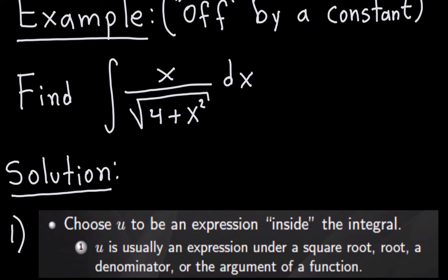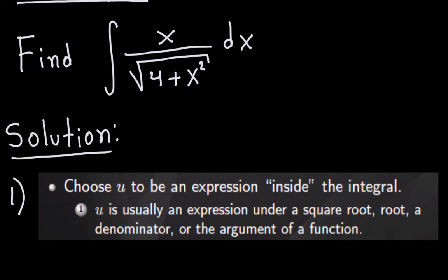To choose a u, remember u has to be something here. As I mentioned, sometimes the u is a certain expression under the square root, the root, the denominator, or the argument of some function. In this particular case, I think it would be wise to use the expression that is under the square root. So in this case it would be 4 plus x squared, and I'm going to use that for my u.